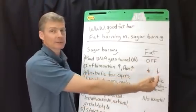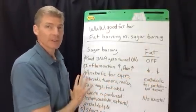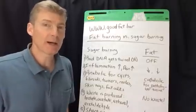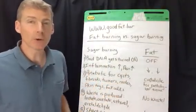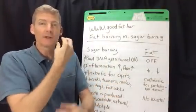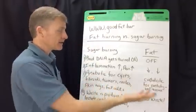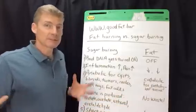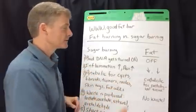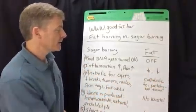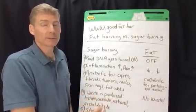One of the advantages of being a fat burner is that all the bad DNA that creates chronic diseases gets turned off. Number two: inflammation goes down and pain goes down. Number three: your body becomes catabolic for pathological tissues — it starts to break down cysts, fibroids, tumors, moles, skin tags, and fat cells. When you see an older person in their 80s with dark spots, skin tags, and moles all over their skin, it's because their body has been burning sugar for 80 years, anabolizing or creating pathological tissue.